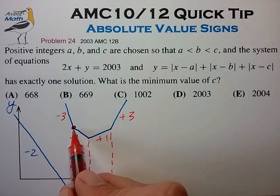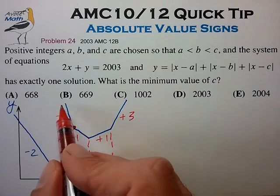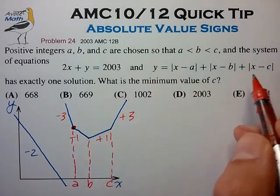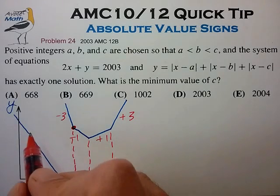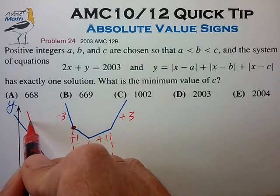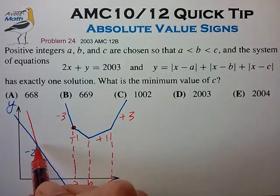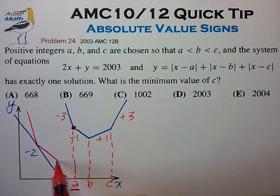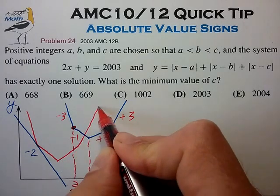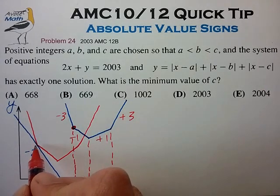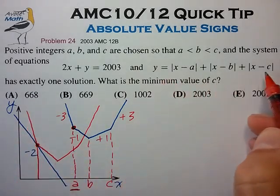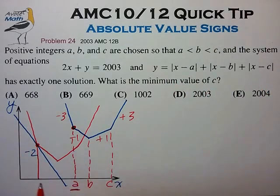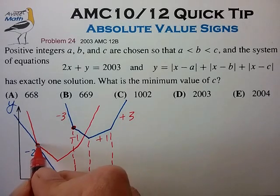So essentially we now know that the point of intersection between the absolute value function and the line graph has to occur at the x value of a. So essentially we can now write what this absolute value function needs to look like. It needs to look like something like this. So essentially this parameter a now has to match up with the absolute value function as well as the linear function. And that's the key to solving this problem.